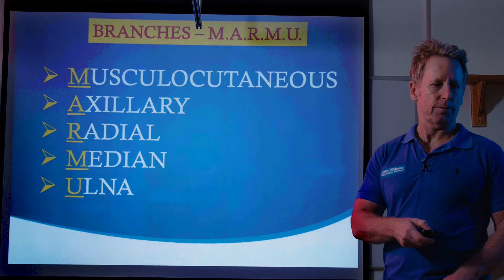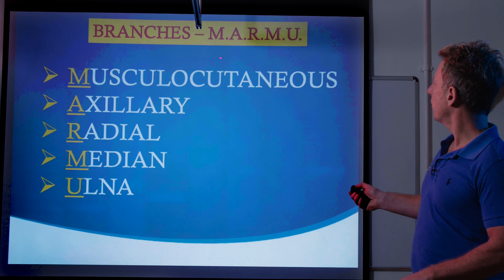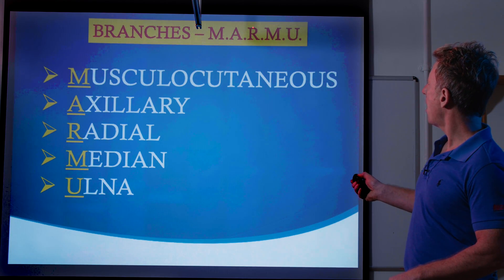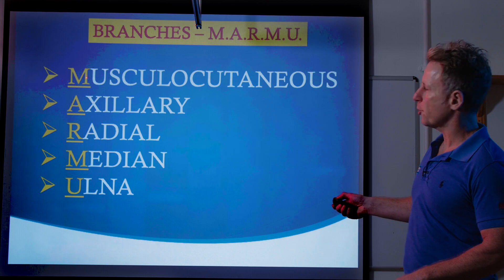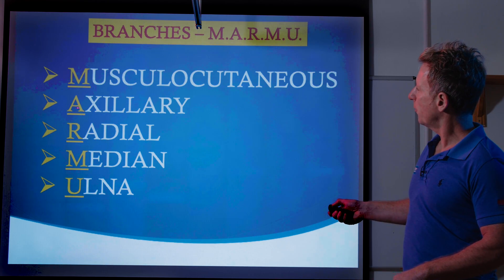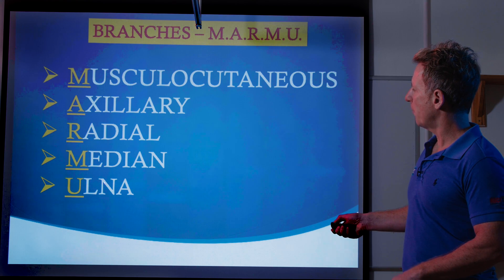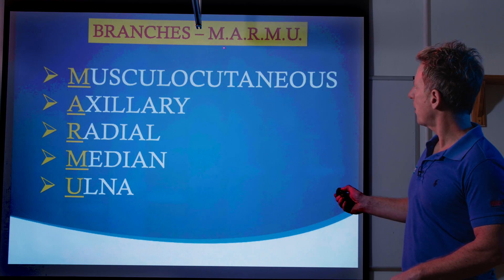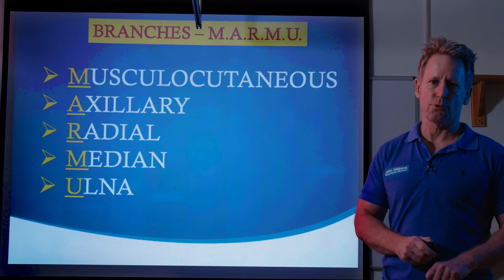The easiest way to remember the terminal branches is the mnemonic MAMU, which relates to the musculocutaneous nerve, the axillary, the radial, the median, and the ulnar — quite a nice simple mnemonic to remember the five terminal branches.